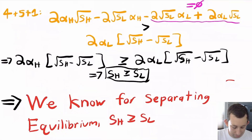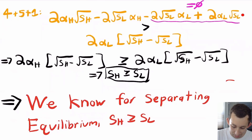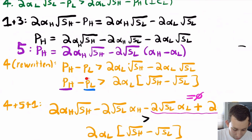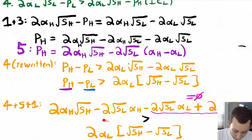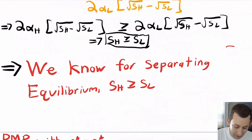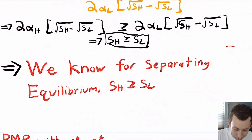Now I combine equations 1, 4, and 5, plugging in for P_L and P_H on the left-hand side while leaving the right-hand side of equation 4 intact. That tells us: 2α_H times this expression ≥ the right-hand side. Since α_H > α_L, what needs to happen is that S_H ≥ S_L. So for a separating equilibrium, the storage offered to a high type must be at least as great as the storage offered to a low type.